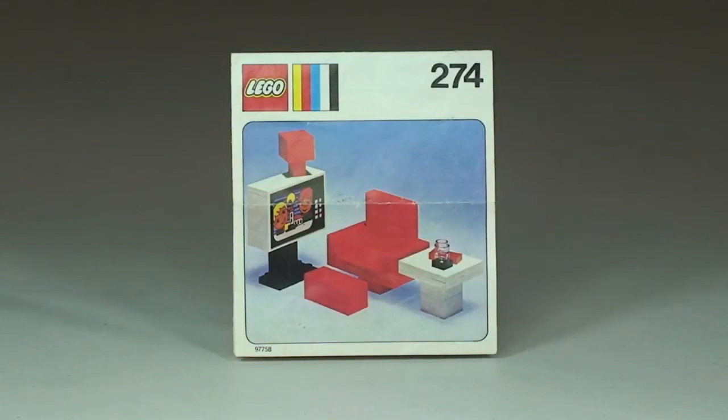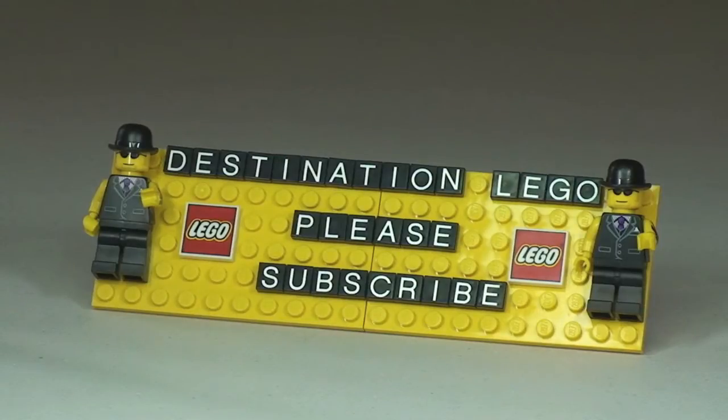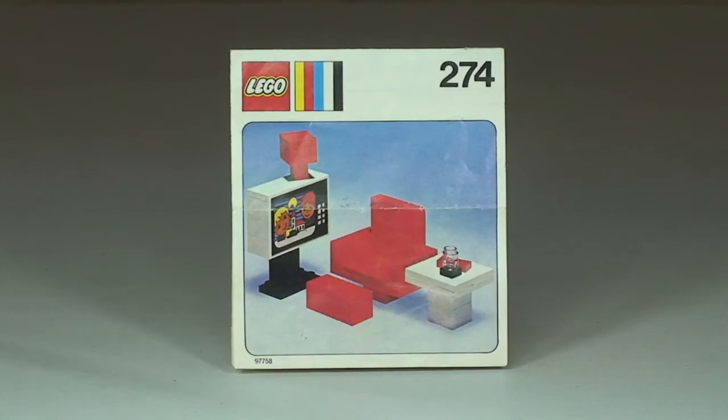Hello YouTube and welcome to another Lego vintage set review and welcome to my channel Destination Lego. Today we're going to be looking at Lego set number 274. This is the color TV and chair. This comes with 68 pieces. It was from the Homemaker theme and this is actually from 1974.